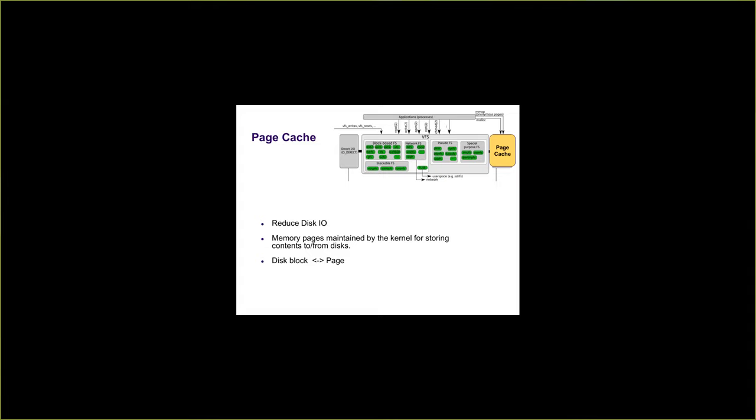One of the main reasons why we have page cache is to reduce disk I/O. Instead of making every write directly to the disk, page cache allows different processes to use the same file. All the writes can be grouped together by the operating system and sent to the device, so instead of sending a request for every write, Linux page cache groups all write requests to the same block together and finally sends them to the device.